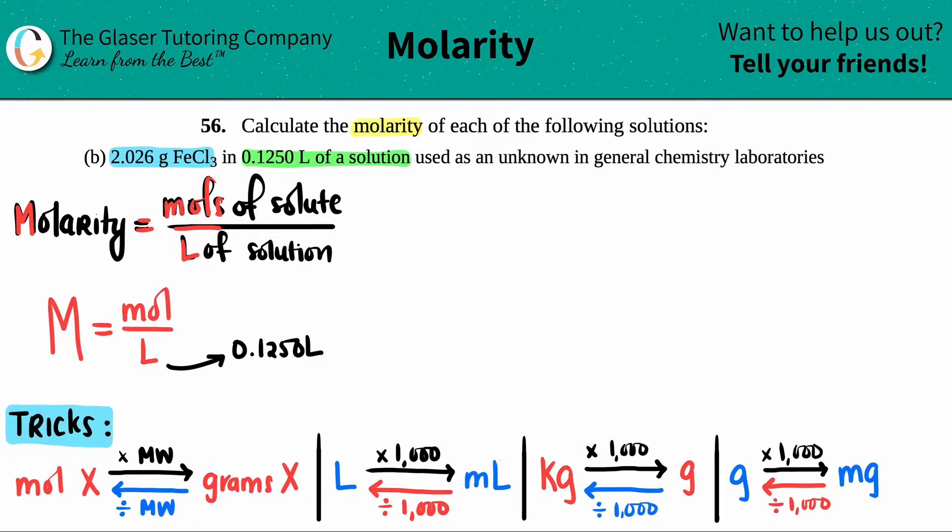In this case, they gave me 2.026 grams of the iron(III) chloride, FeCl3, and I just have to quickly convert to moles of the same compound. Now we've done grams to moles back when we were doing dimensional analysis, but there's a little quick trick to help us through this conversion.